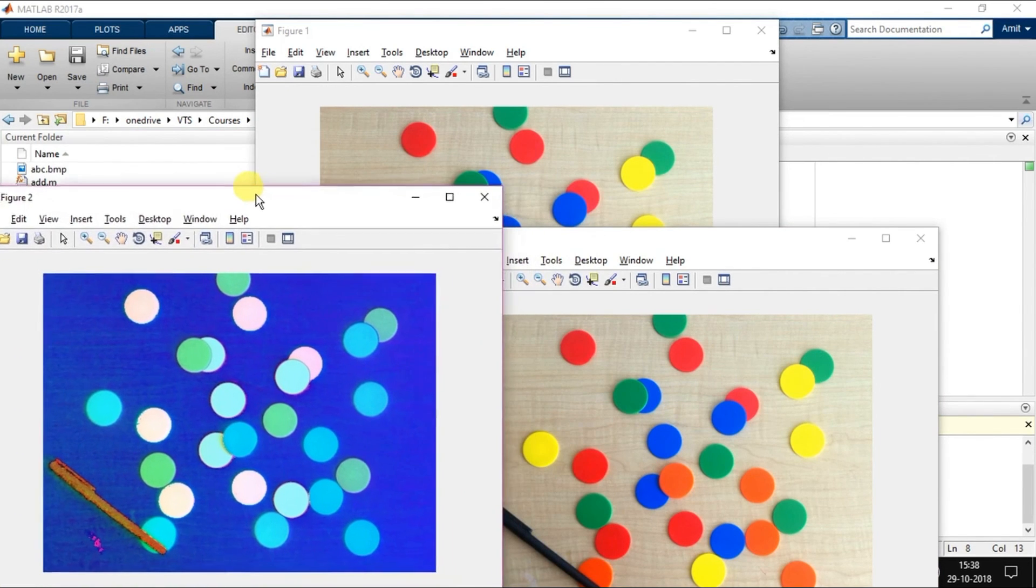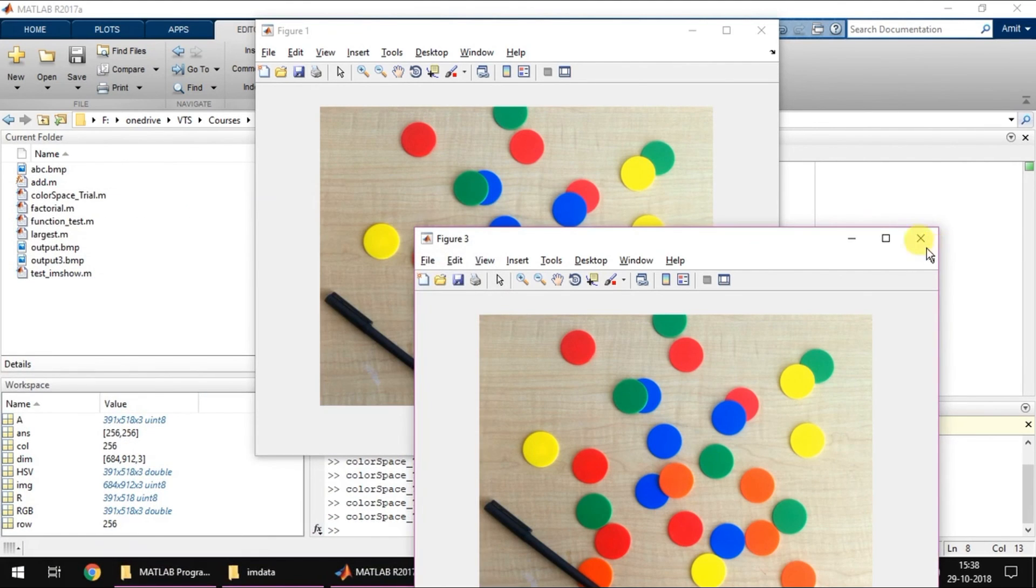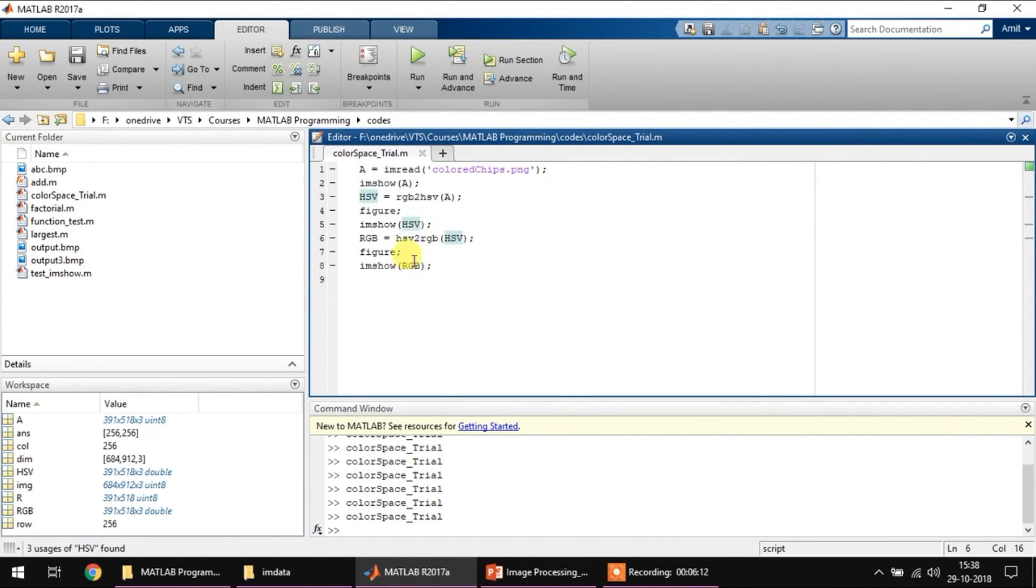So that's about color space in image processing. Further we will see how and what we can do with this HSV format. For now just understand how to do the conversion from RGB to HSV and back. Try out this code, try it with some other images also to see different results. Thanks for watching this video.